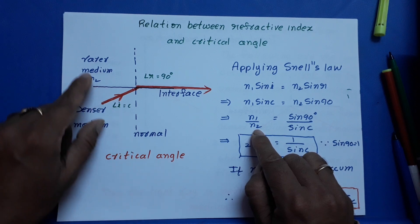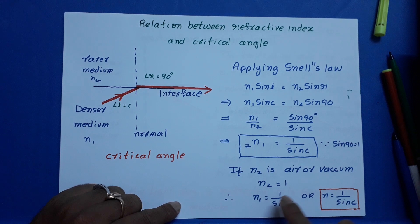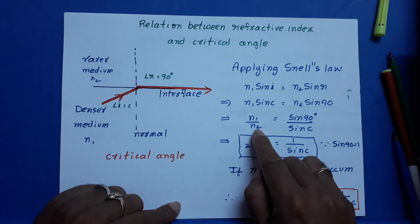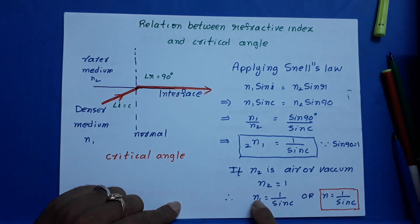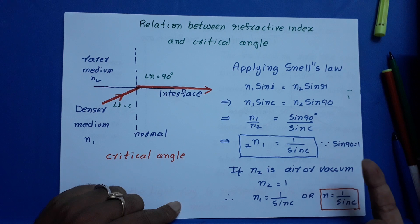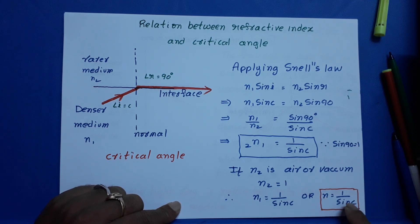If N2, that is the rarer medium — if this medium is air or vacuum, then its refractive index is 1. In such a case, take N2 as 1. Then it will be N1 is equal to 1 by sin c, or N is equal to 1 by sin c. You need not write N1; you can write it as N. So N is equal to 1 by sin c. This is the relation between absolute refractive index and critical angle.